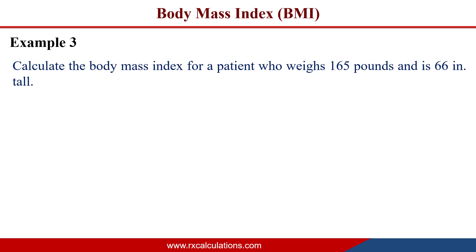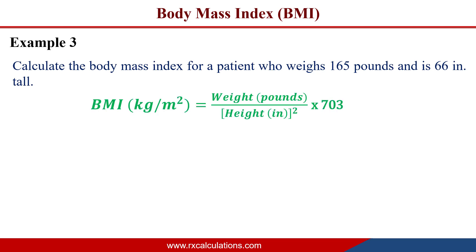Example 3: Calculate the body mass index for a patient who weighs 165 pounds and is 66 inches tall. Since the weight is in pounds and the height is in inches, we use the imperial BMI equation: BMI = (weight in lbs ÷ height in inches²) × 703. This allows us to calculate the BMI expeditiously without extensive unit conversions.